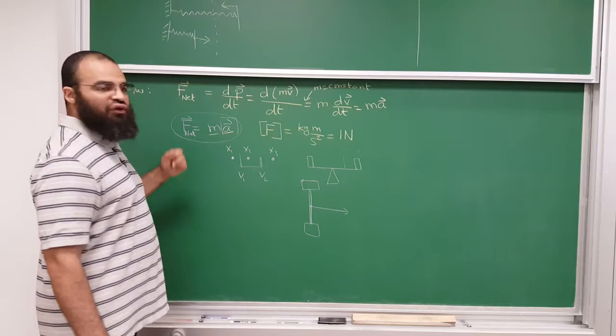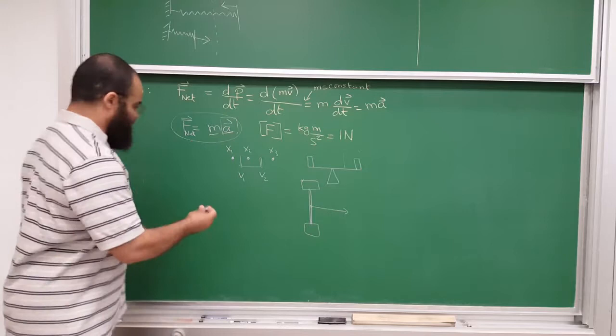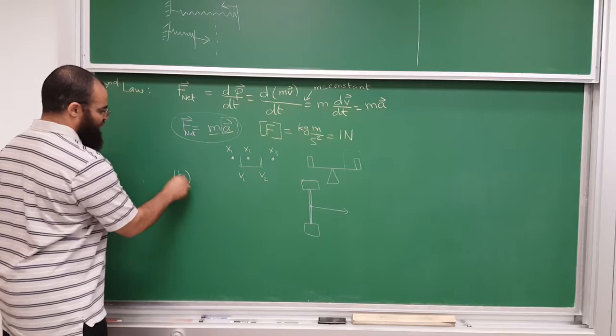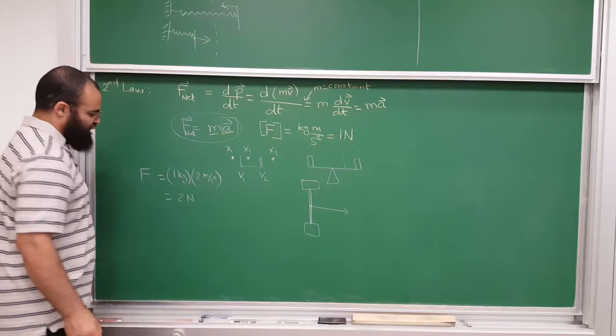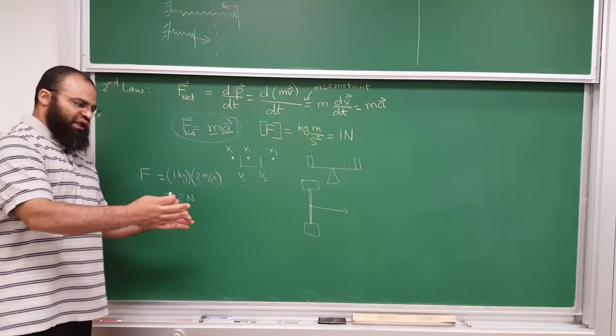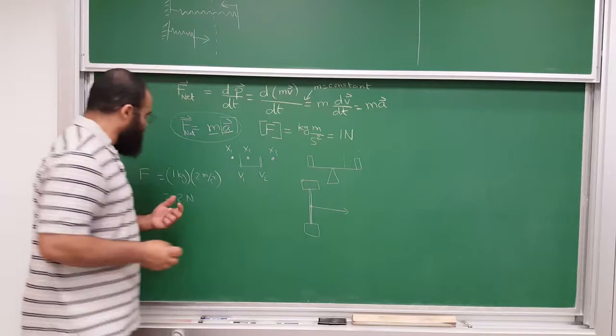Once you know how much acceleration has been caused, and you already know the mass, then you know the force — the product. For example, if your mass is one kilogram and it caused an acceleration of two meters per second squared, then the force has to be equal to two newtons: one times two is two newtons. So you can calibrate that and have a way to measure forces.